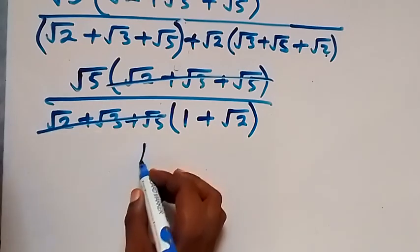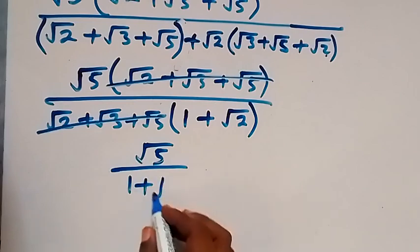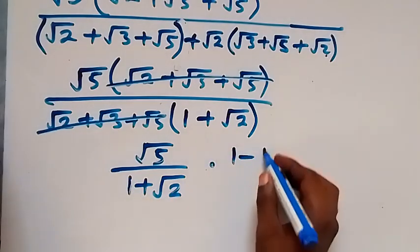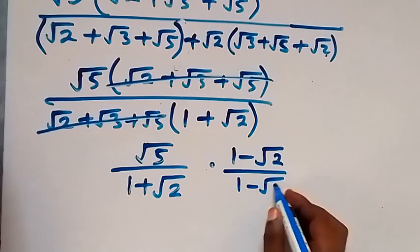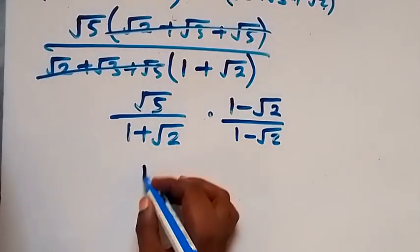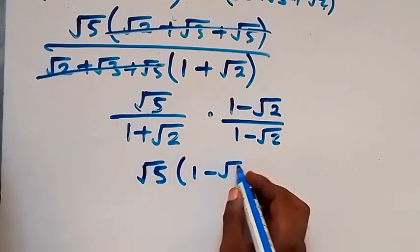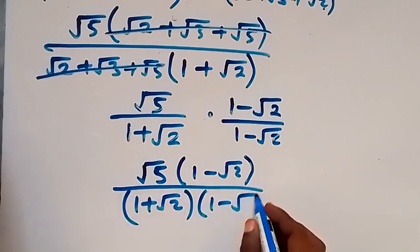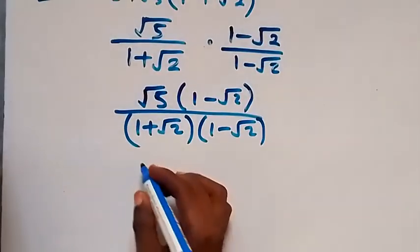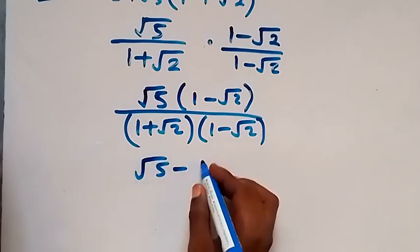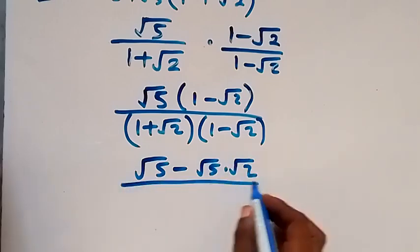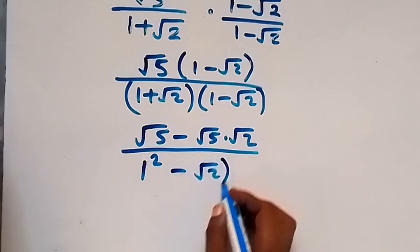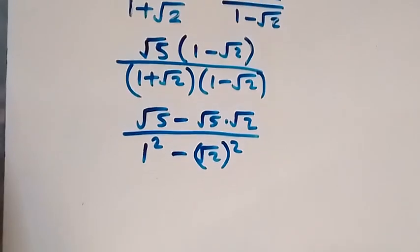What we have left is root 5 divided by 1 plus root 2. Then when we rationalize by multiplying with the conjugate, we have times 1 minus root 2 over 1 minus root 2. This gives us root 5 multiplied by 1 minus root 2, and 1 plus root 2 multiplied by 1 minus root 2, which is in the form of a difference of two squares — so we have 1 squared minus root 2 squared.